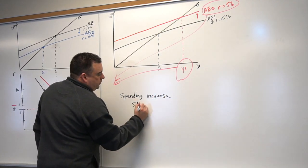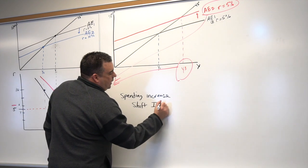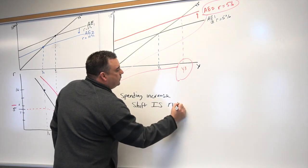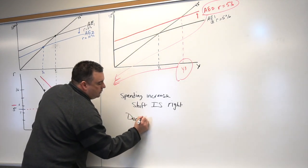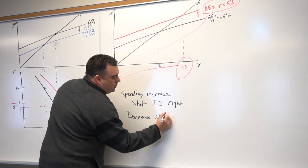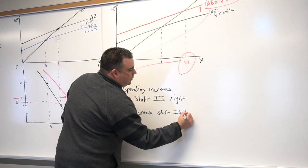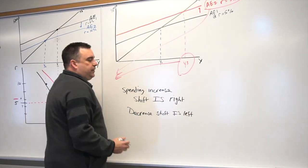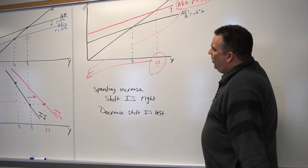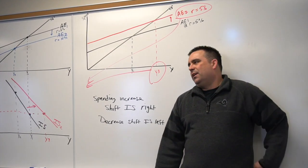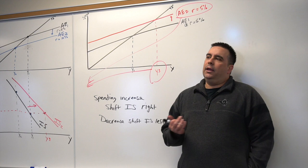To the point where if we ever have any kind of spending increase, it's going to shift IS to the right. And if we have a spending decrease, it's going to shift IS to the left. That's not a perfect, always blanket rule, but it generally works.